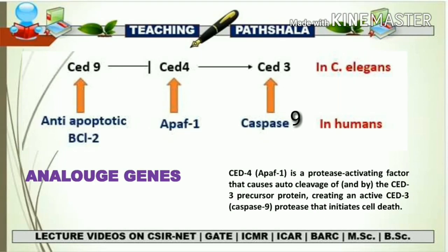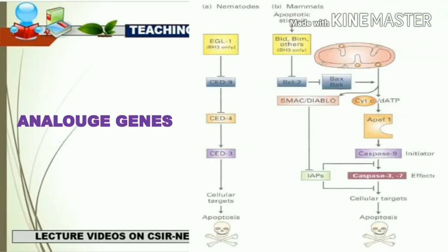Sometimes in the NET exam they ask questions about these analogous genes — they may give a function or the relation between them and ask what kind of activity they are showing. You might get the same flowchart of C. elegans genes showing how they perform and inhibit each other, then be asked what kind of activity each gene shows — like CED9 performing anti-apoptosis, and CED4 and CED3 performing pro-apoptosis. You should be prepared because the question pattern can change but the concept behind it will remain the same.